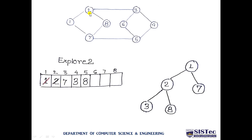Exploring node 2 in the graph, we have two options: we can go toward 3 or toward 8. Nodes 3 and 8 were not already in the queue, so we can visit them. First, we insert 3, then 8. In the spanning tree, node 2 has left child 3 and right child 8.